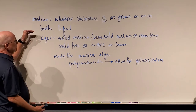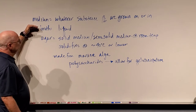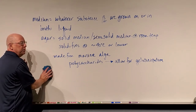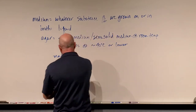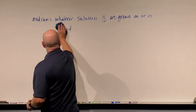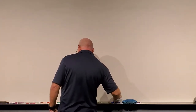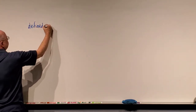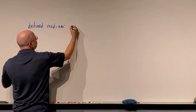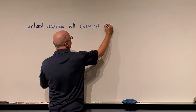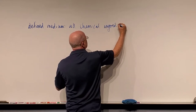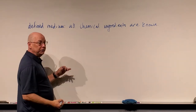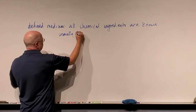You need to know that whatever we're growing bacteria on is called the medium. It can be liquid like broths, or it can be an agar, and each can be altered in their chemical composition. When we talk about a defined medium, all chemical ingredients — and usually their concentrations — are known.